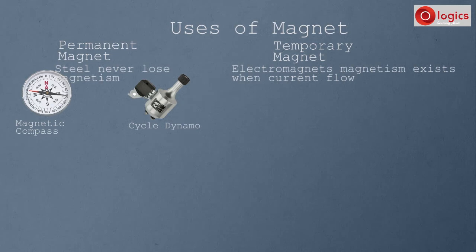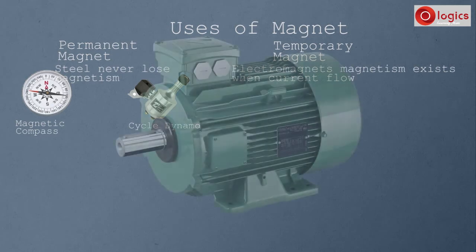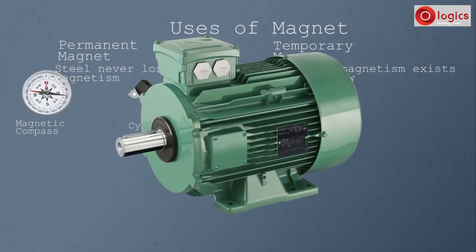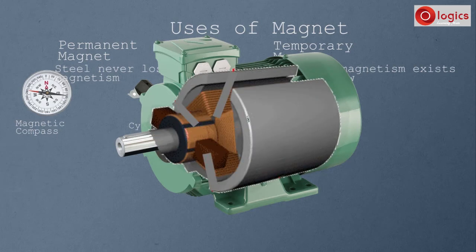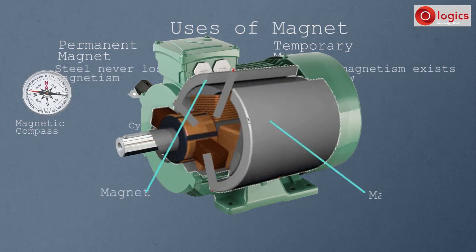Permanent magnets are also used in electric motors. This is an electric motor — inside it, magnets are used. Here, these are the magnets.